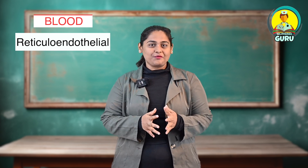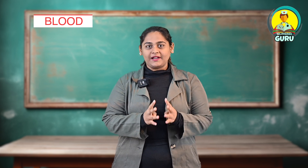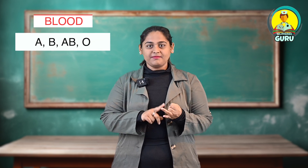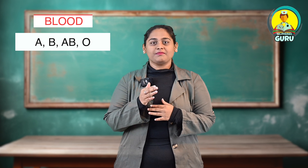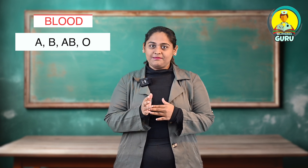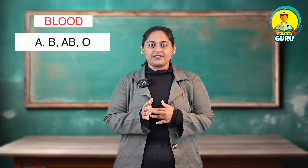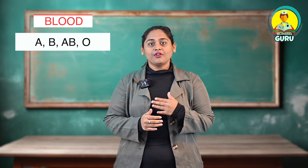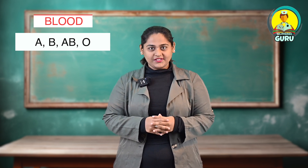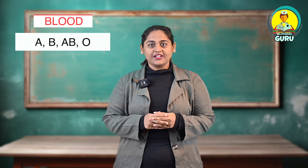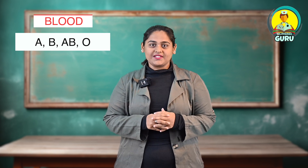Lastly, a very important topic is blood grouping. There are mainly four blood groups: A, B, AB, and O. These are further categorized into A positive, A negative, B positive, B negative, AB positive, AB negative, O positive, and O negative, according to the presence of the Rh factor. AB positive is called the universal receiver and O positive is called the universal donor.